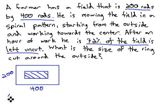Well, let's start by considering the area of this rectangle. The whole thing is 200 by 400, which gives us 80,000.